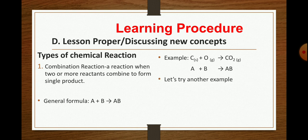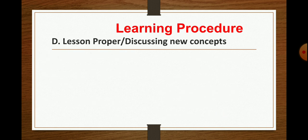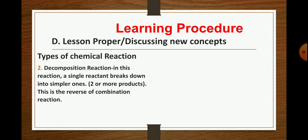Let's try another example. What will be the product of nitrogen and hydrogen gas when combined together? What do you think? That's correct answer. When nitrogen gas combined with hydrogen gas, it would form ammonia or NH3. Number two type of chemical reactions, we have decomposition reaction. In this reaction, a single reactant breaks down into simpler ones wherein two or more products could be formed and this is the reverse of the combination reactions which is number one.